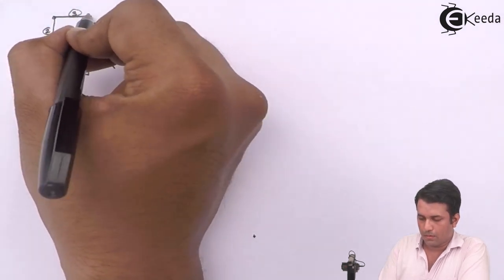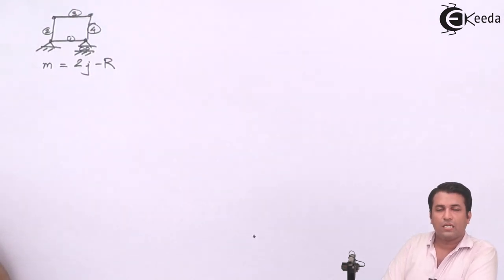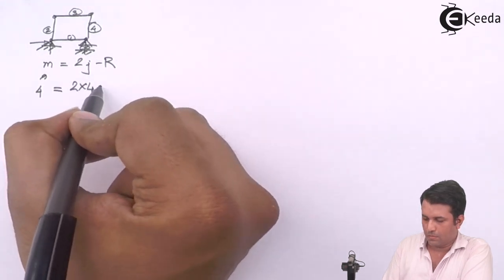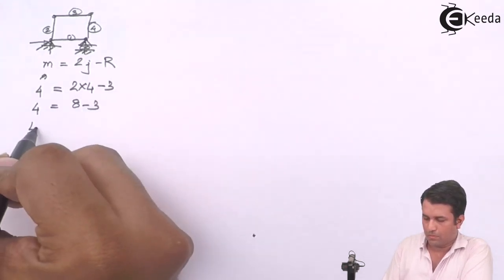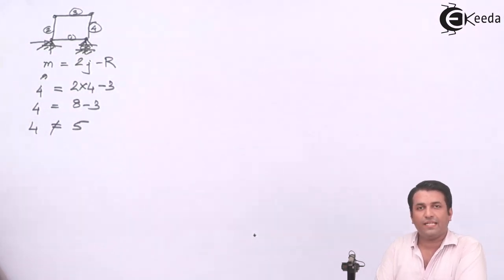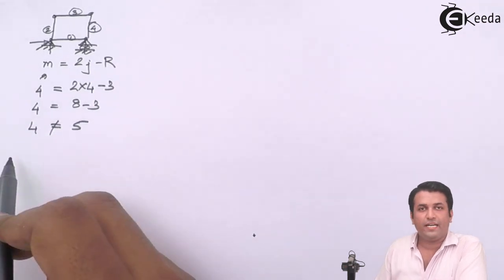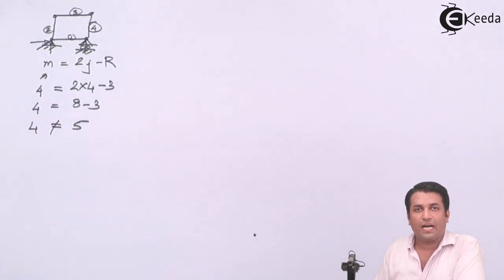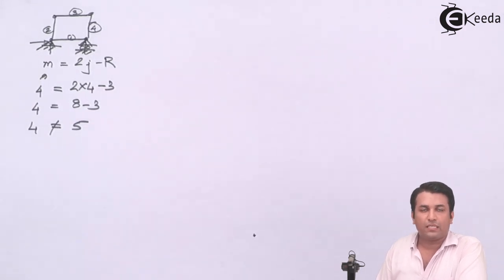We have four members, we have four joints, and same as in the previous example, we have three reactions. We can see that my left hand side and right hand side both are not same. That means this is not a stable truss. On the left hand side, I can see the number of members as 4, while on the right hand side, I can see the number as 5. Since the number of members is 4, it means that one member is less in this case. So I can say that this is a deficient truss.